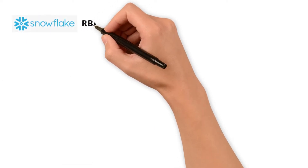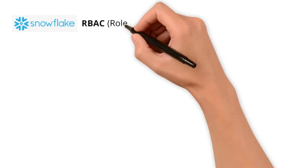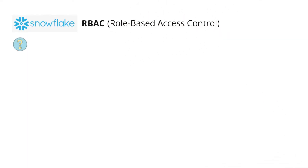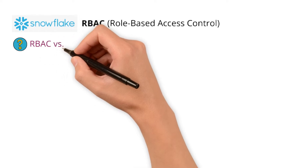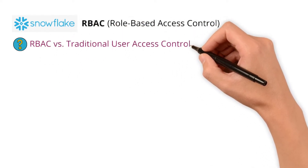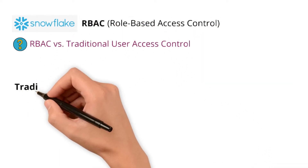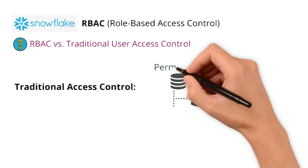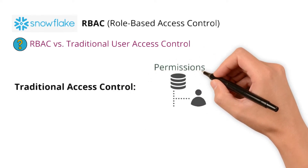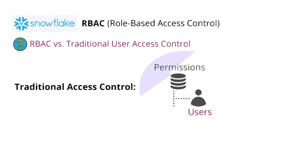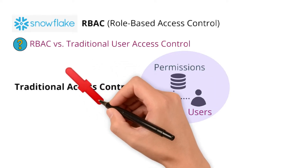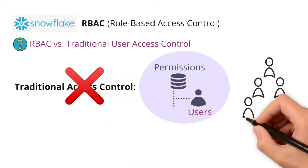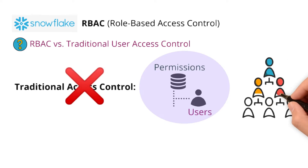Snowflake follows RBAC, that is role-based access control. But how does this RBAC differ from traditional user access control? In traditional access control, permissions are granted directly to users. This method does not scale because as the number of users grows, managing permissions becomes chaotic.